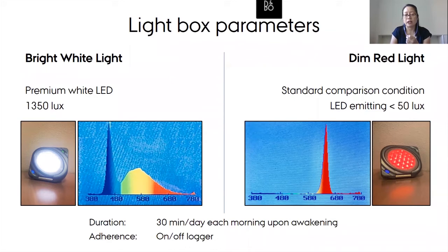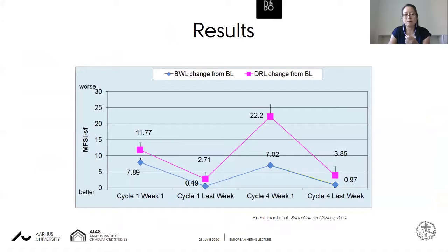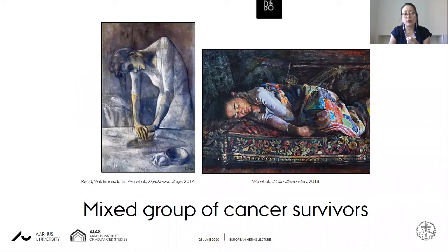In Ancoli-Israel's studies, patients were given light boxes to use for 30 minutes each morning upon awakening, with adherence measured using an on-off logger on the back of the box. In breast cancer patients, the most important finding was that at least for one stage of chemotherapy treatment, use of the bright white light box actually prevented fatigue compared with the dim red light. Dim red light patients had high levels of fatigue at that stage, but those with bright white light had lower levels.